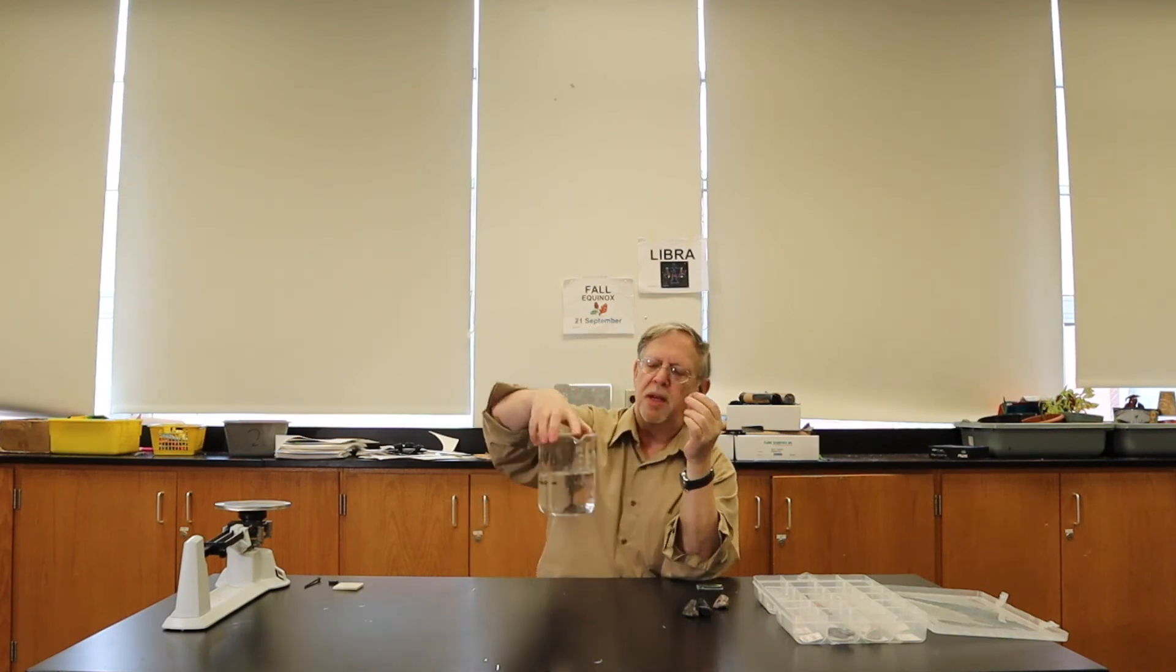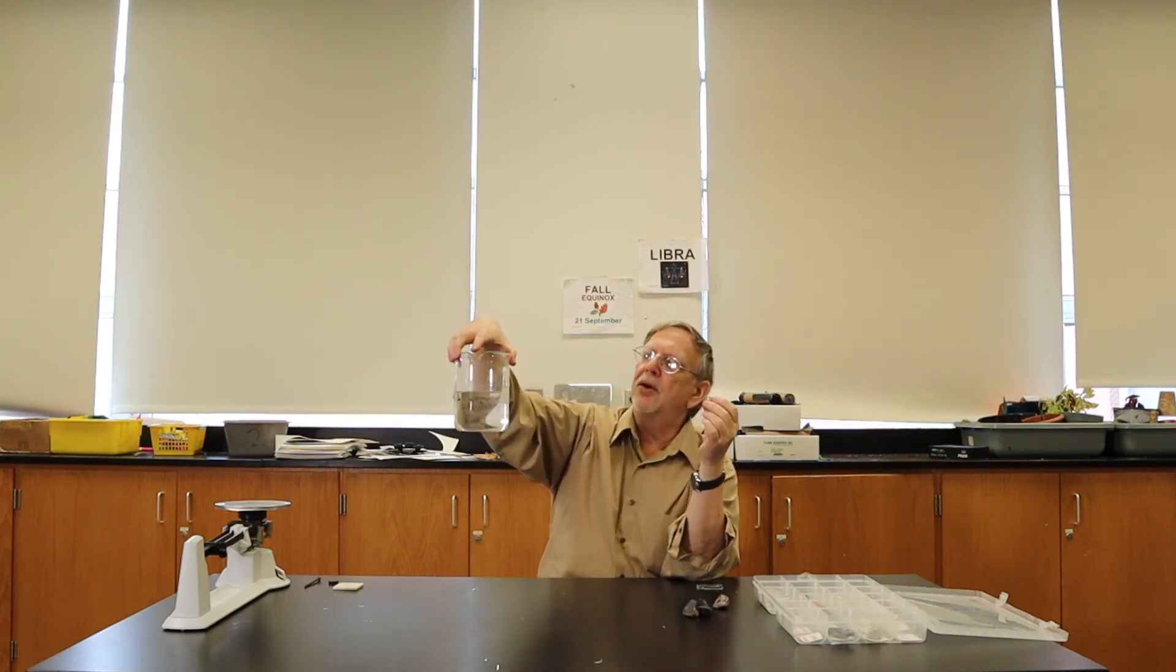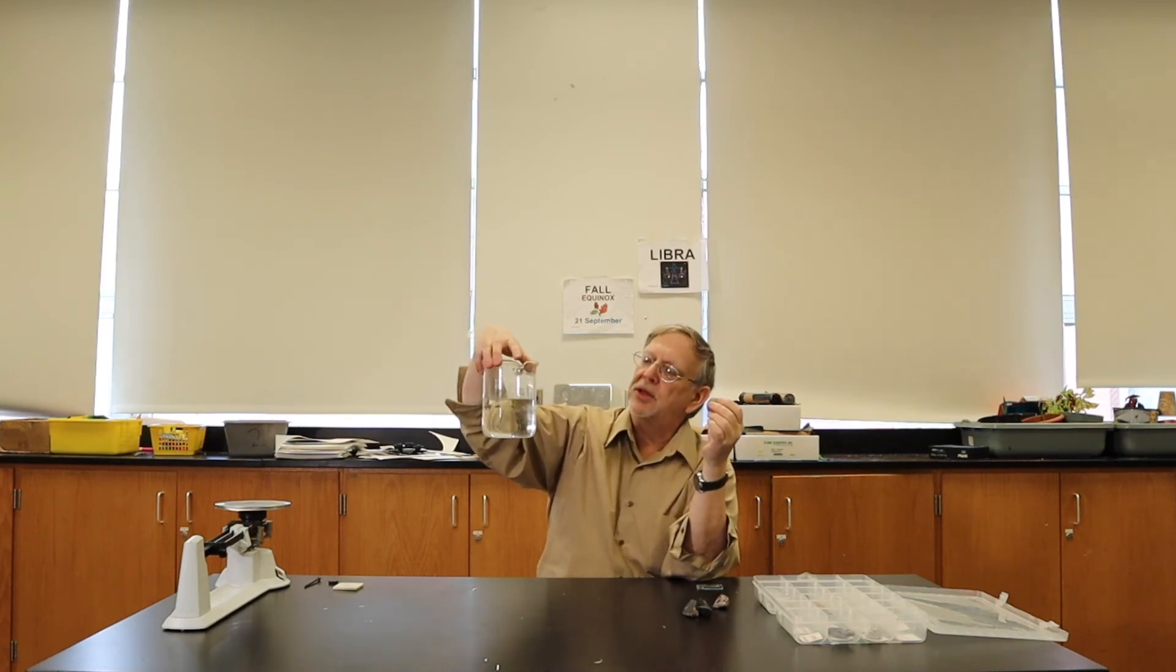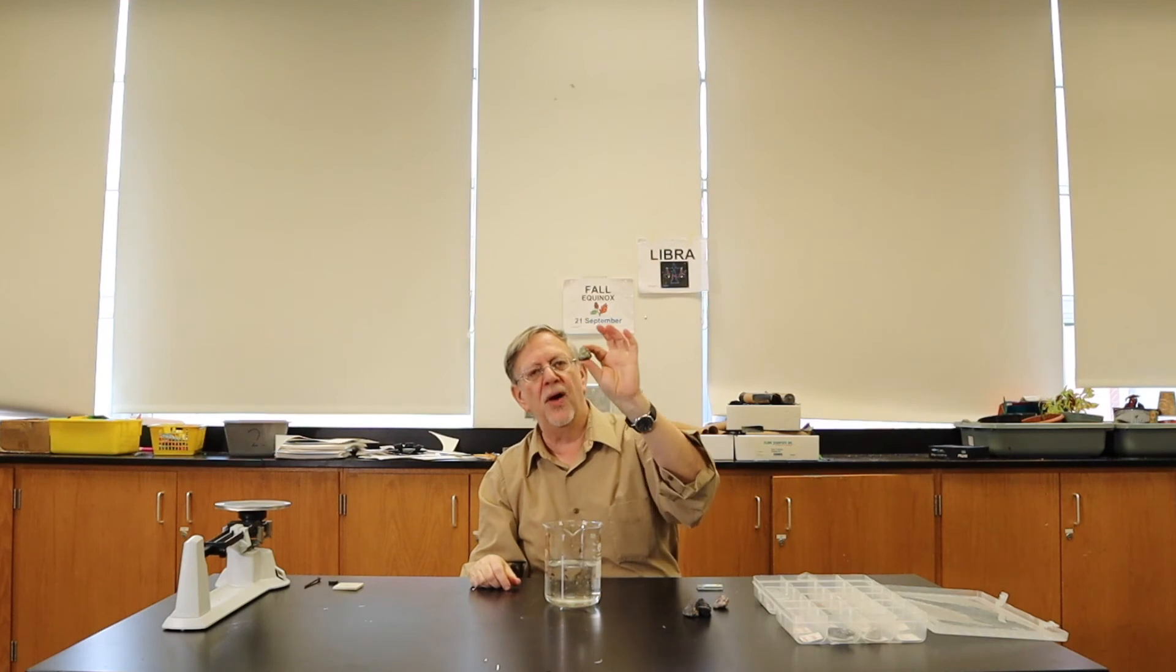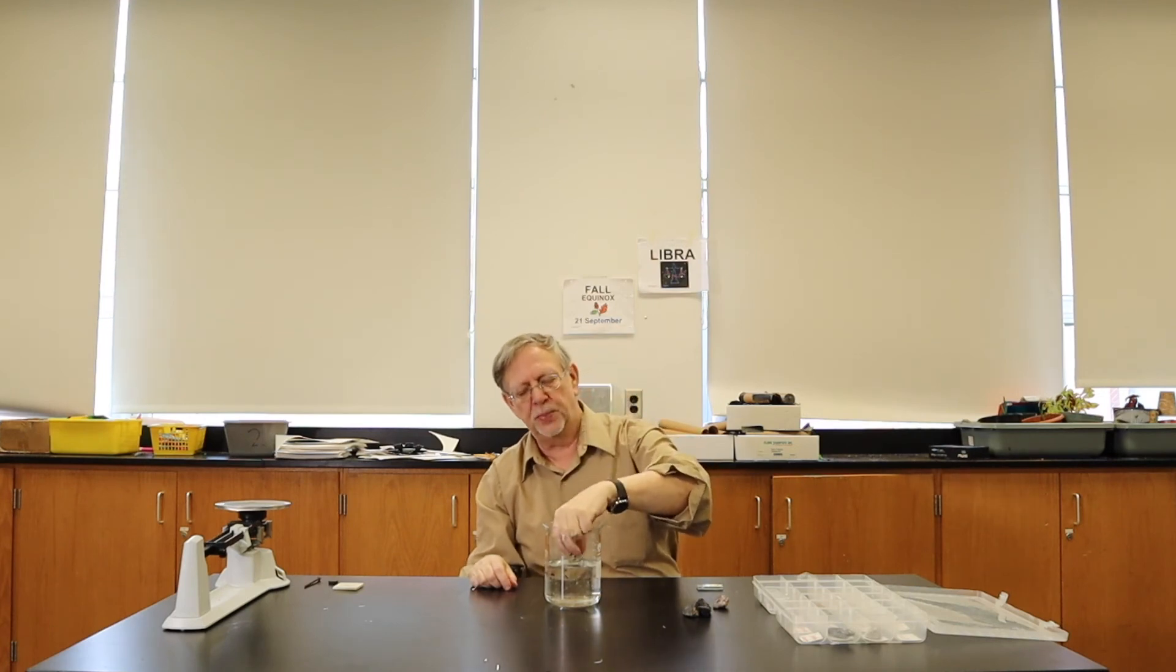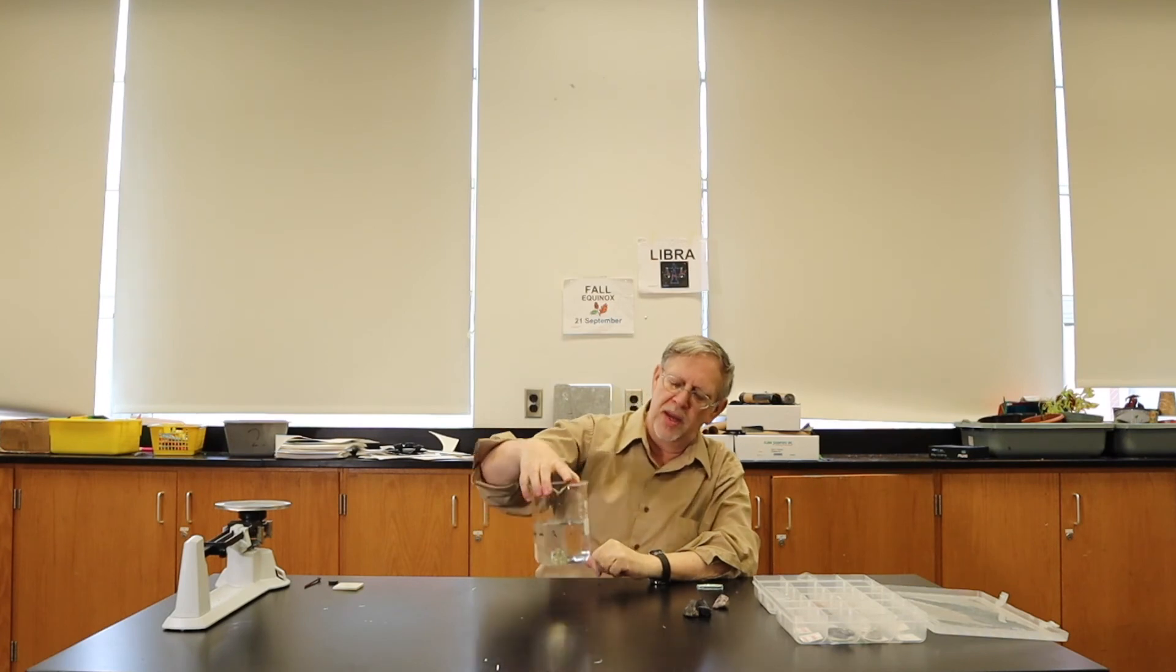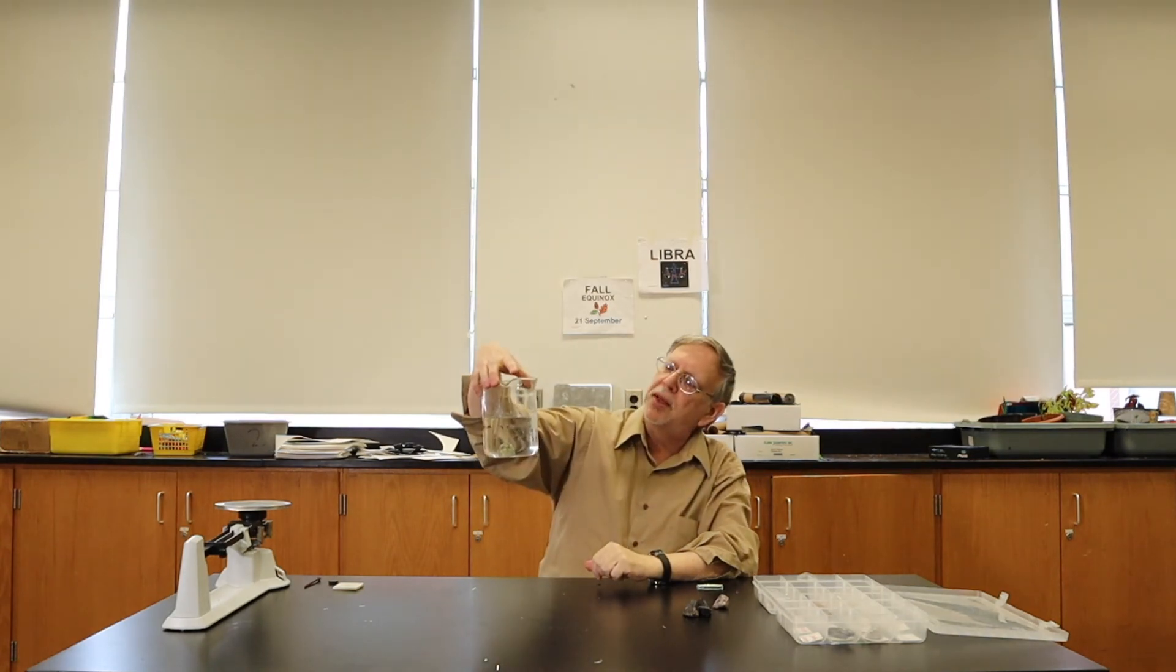We put water in a container. In this case, it's a beaker. And the water level here says approximately 450 milliliters. And we put the mineral in. And the volume of the mineral will displace a certain amount of water. We read it again. This time it says approximately 500 milliliters. So approximately it went up 50 milliliters.